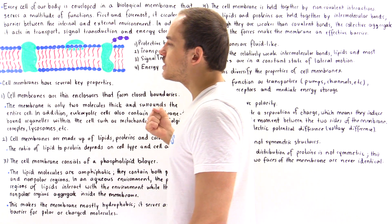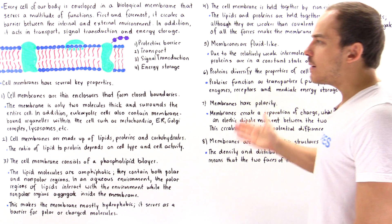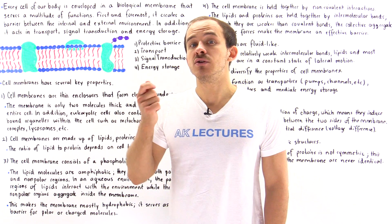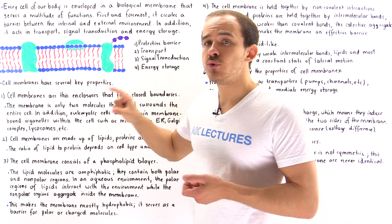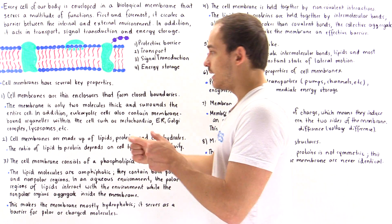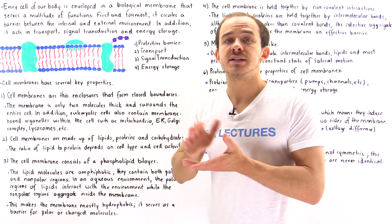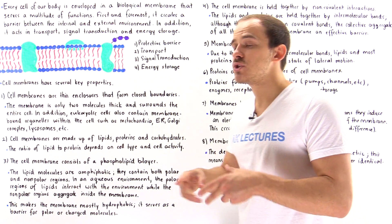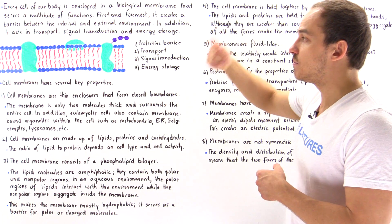Every single cell inside our body contains a cell membrane, and all these cell membranes have the same properties. Property number one is these cell membranes are relatively thin and they enclose the entire cell, creating a closed boundary. Being thin means they consist of only two layers of molecules — two layers of lipids. Inside eukaryotic cells, individual organelles such as the nucleus, the Golgi complex, the endoplasmic reticulum, lysosomes, and peroxisomes also contain their own membranes that play the same type of role.